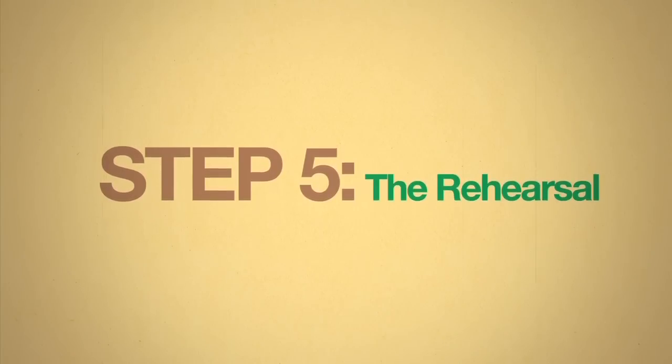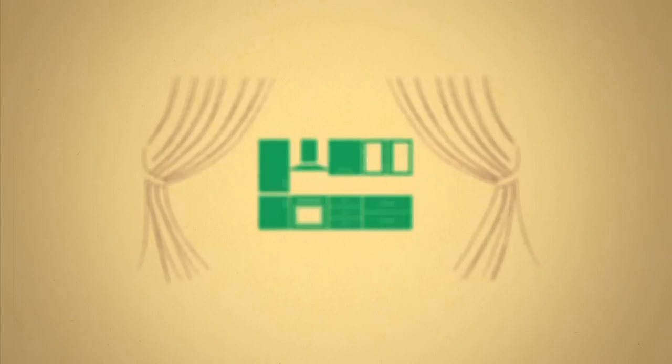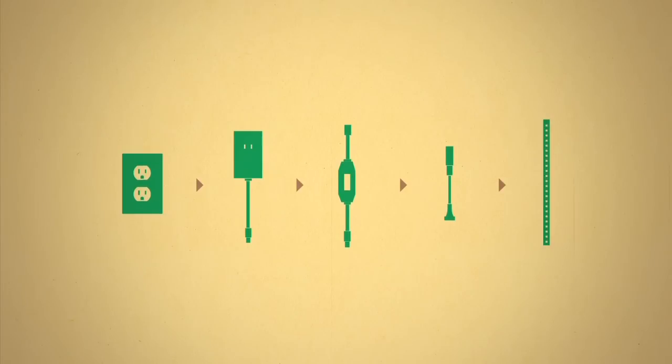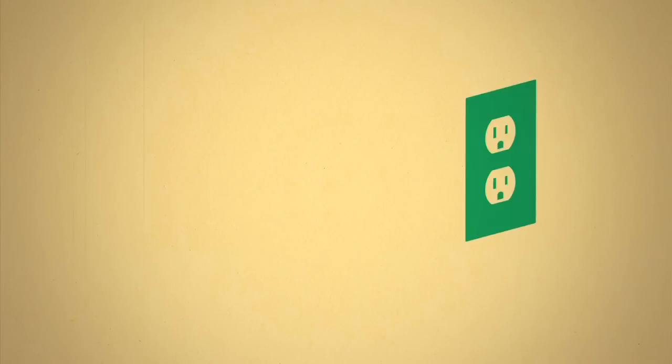Step 5. It's almost showtime, but we need a rehearsal to make sure everything is connected. Power outlet, 12 volt adapter, accessory, connector, strip light. Once the show is staged, plug it in.